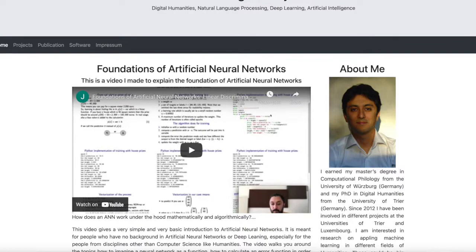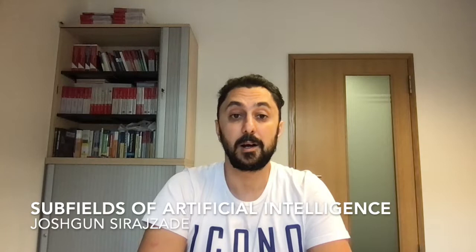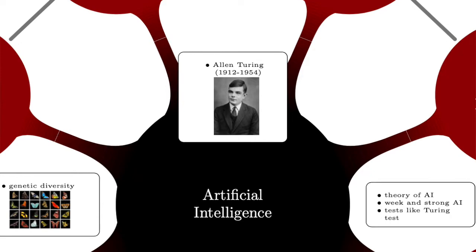The poster can be downloaded for free from my home page on GitHub. I will include the link in the description. Hi, my name is Joshkin Siratsade and I did extensive research on various aspects of artificial intelligence. Before we start with the individual areas of AI, let us talk about the history and theory of AI.